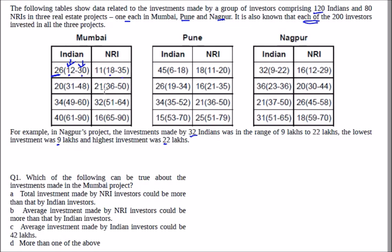These Indians have also invested in other projects, but you don't know how many of the 26 belong to which investment band in the other cities — you have no idea how this is distributed. So it's partially a Venn diagram problem, partially an averages-type question.